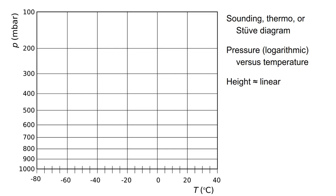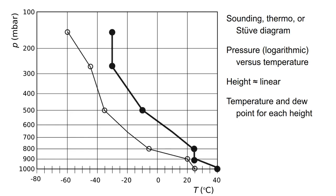So if you go twice as far up in the diagram, you go twice as far up in the atmosphere, more or less. The sounding plots the temperature and the dew point for each height, and then you'll get a graph with two lines — one for the temperature and one for the dew point. As you can see, the temperature drops with altitude, and the dew point is lower than the temperature at all altitudes, which means that there are no clouds forming here.